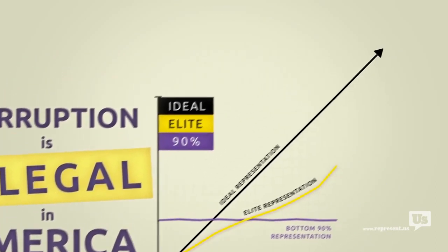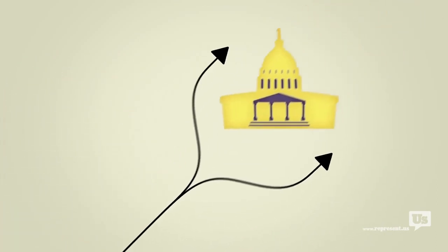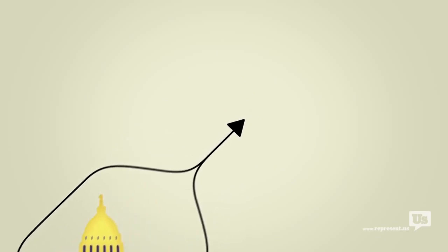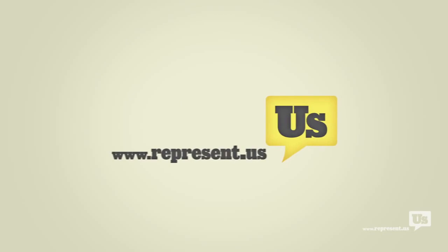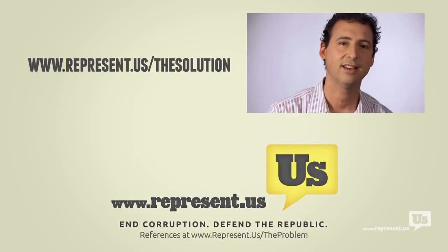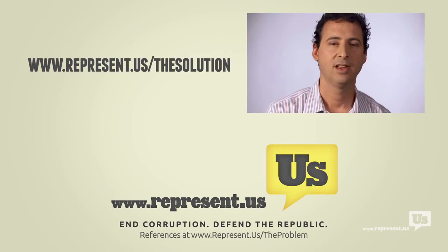What we need is a plan that lets us go around Congress and do what the American people do best. Fix this mess ourselves. Well, good news. We have that plan, and it's already working. Now that we've got the problem covered, let us show you how to be part of the solution.